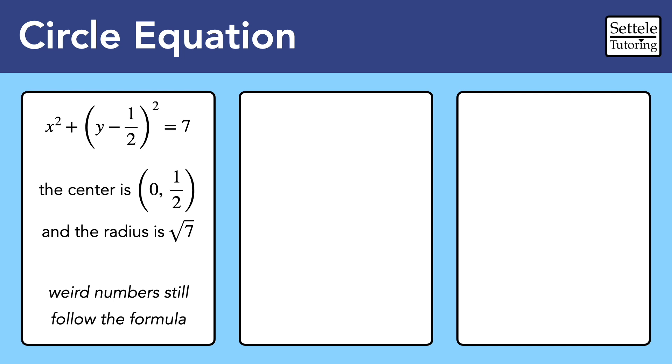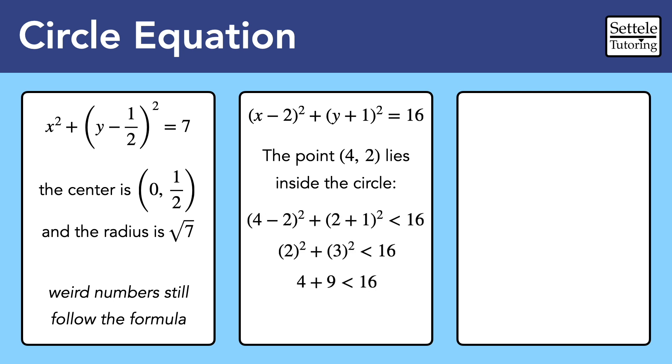Sometimes we're asked whether points are inside or outside of a circle, and we can tweak the circle equation to find that out. In this case, I would plug 4 and 2 in for x and y. And if the point is inside the circle, then the left side will be less than the right side.